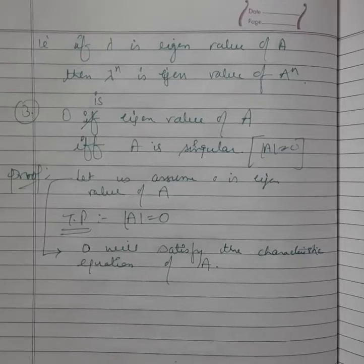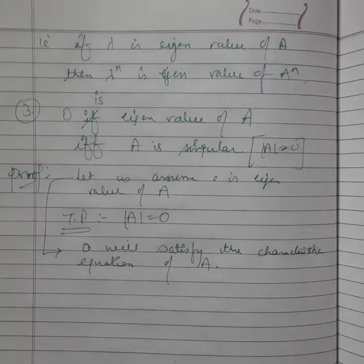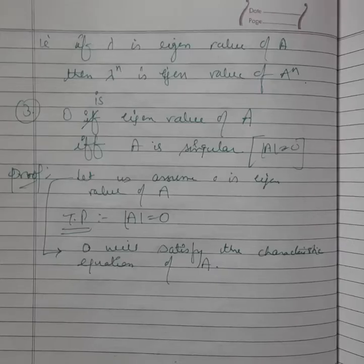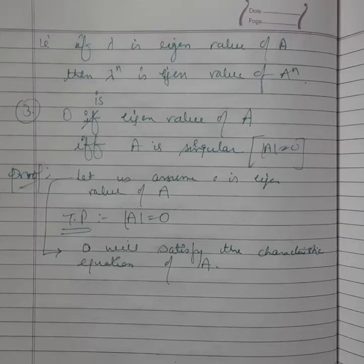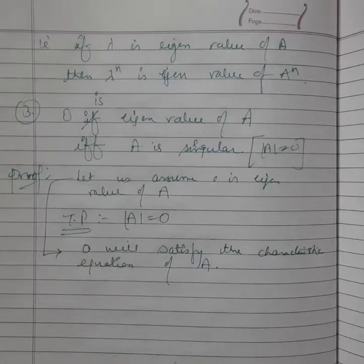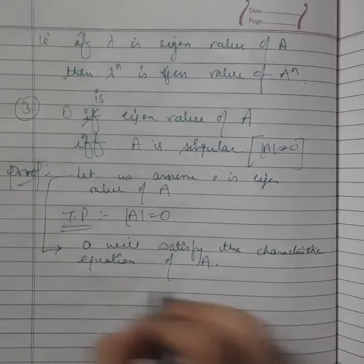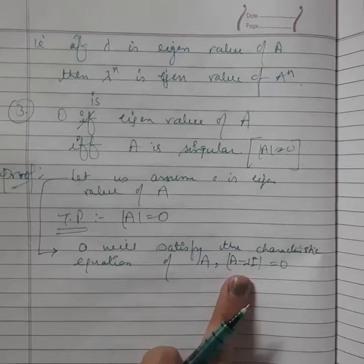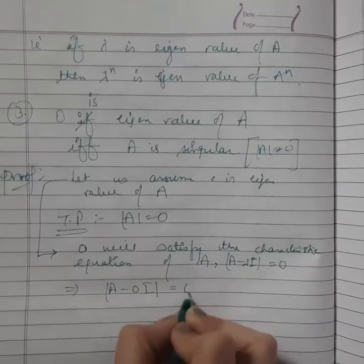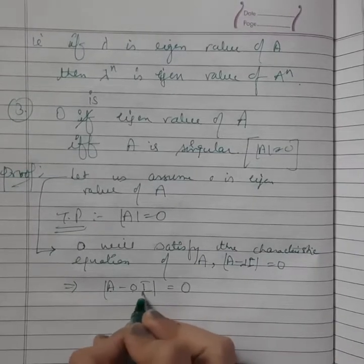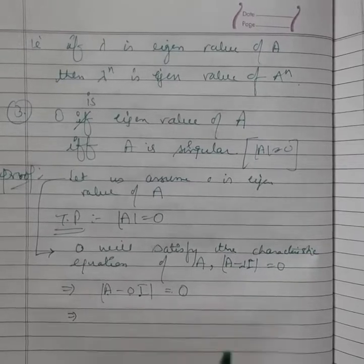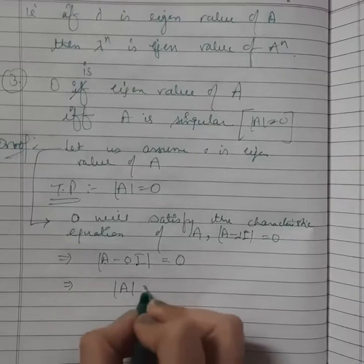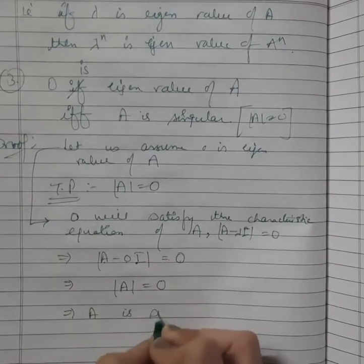The characteristic equation is the determinant of (A minus lambda I) equals zero. Since eigenvalues are the roots of the characteristic equation, and zero is an eigenvalue here, zero must satisfy this equation. Substituting lambda equals zero, we get the determinant of (A minus 0 times I) equals zero, which simplifies to the determinant of A equals zero. This means A is singular.